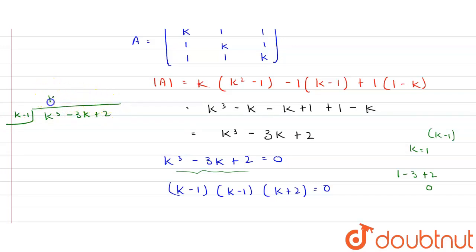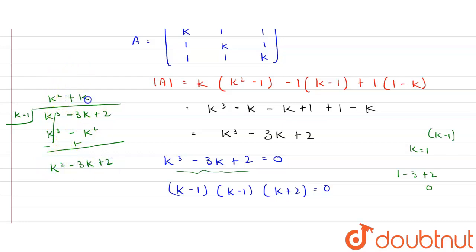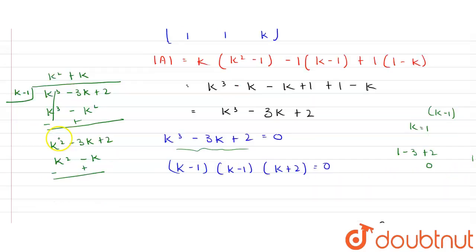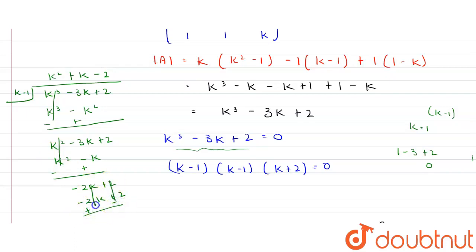Multiplying (k - 1) by k² gives k³ - k², which cancels leaving k² - 3k + 2. Multiplying by k gives k² - k, leaving -2k + 2. Multiplying by -2 gives -2k + 2, which cancels completely with remainder zero.